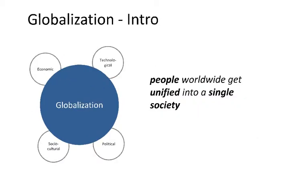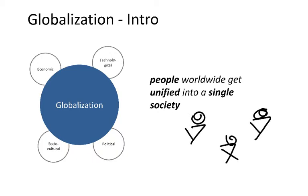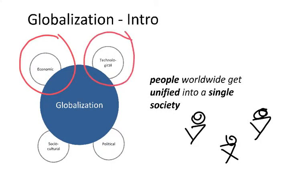One way to see globalization is how people from different points in the world get closer together and get more unified into a single society. This can be seen from different points of view: from the economical point of view, from the technological point of view, from the socio-cultural point of view, and from the political point of view.